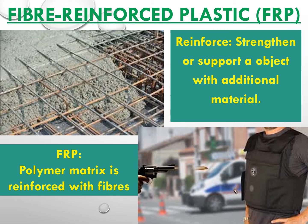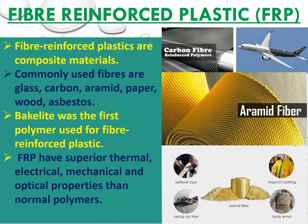Just like iron, we can add additional materials to polymers to make them strong and stable. That is called fiber reinforced plastic — where a polymer matrix is reinforced with fibers. Fiber reinforced plastics are composite materials, meaning we are adding different materials into a base polymer.